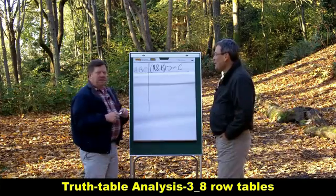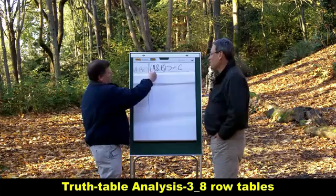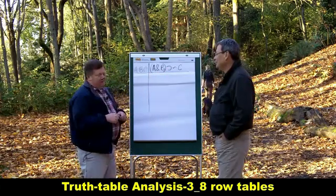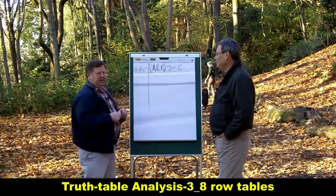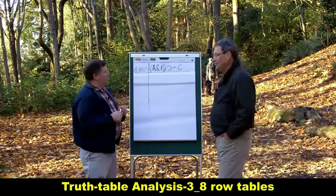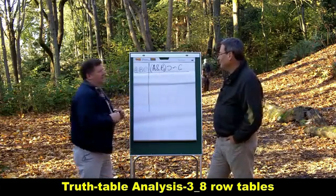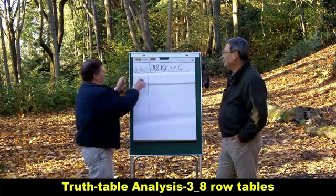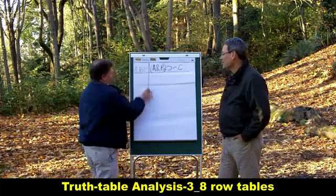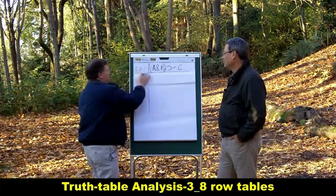You take two and raise it to the nth power, where n is the number of letters in your formula, then that will tell you how many rows your table will have. So this table's gonna have two to the third rows, because there's three letters, and that's eight rows. And if you do it this way, you'll get all the possible truth-value combinations for the three letters.